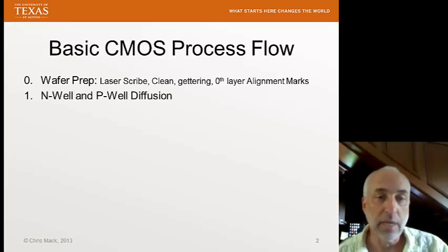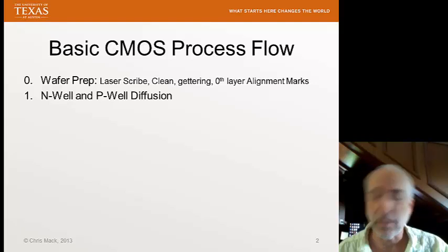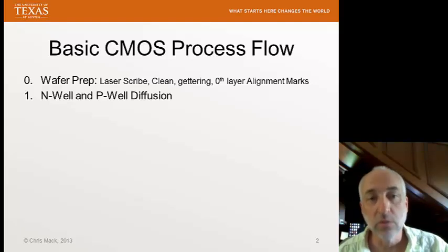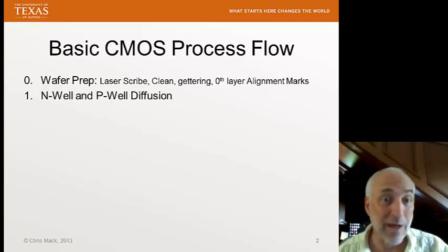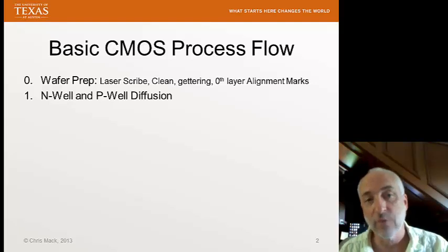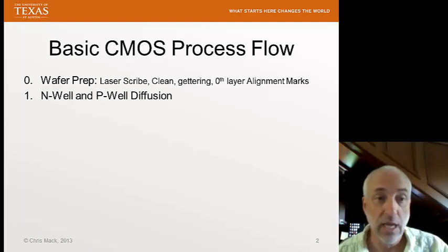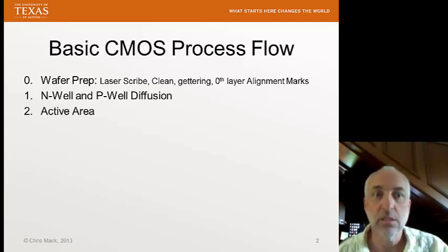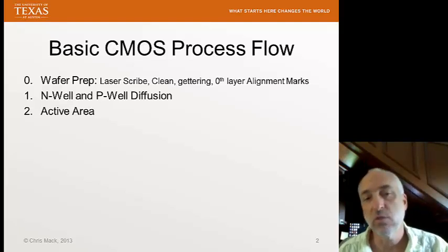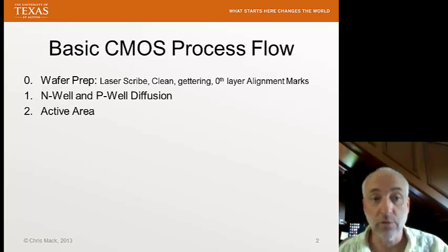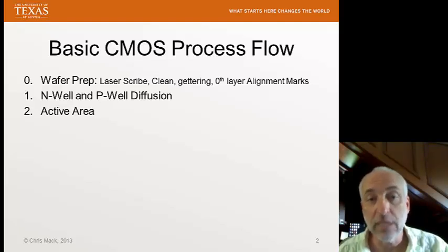Step one — and sometimes the order of these steps varies depending on the type of process — we'll create N-wells and P-wells. Sometimes we use the wafer and its doping instead of one of these wells, but today it's much more common to have both an N-well and a P-well. These form the regions of the wafer where we're going to create our devices with the doping we want. Then we'll create the active area, which defines the regions that are going to be isolated with a thick oxidation and those regions that are active — that is, where our transistor is going to be. Every transistor is surrounded by an oxide insulator to isolate it.